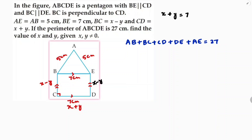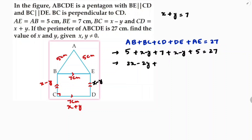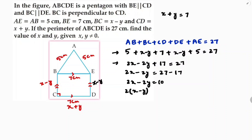Substituting: AB is 5, BC is x minus y, CD is 7, DE is x minus y, plus AE 5, equals 27. So 2x minus 2y plus 5 plus 5 plus 7 equals 27, giving 2x minus 2y plus 17 equals 27, so 2x minus 2y equals 10.